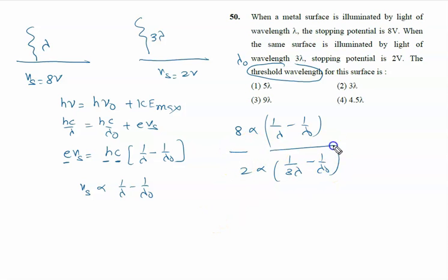Divide both the equations. 4 equal to 1 upon lambda minus 1 upon lambda node over 1 upon 3 lambda minus 1 upon lambda node.